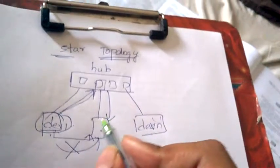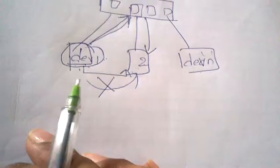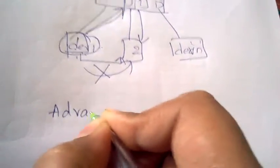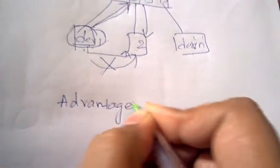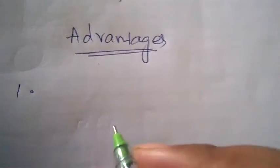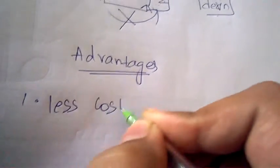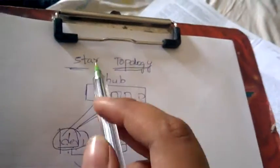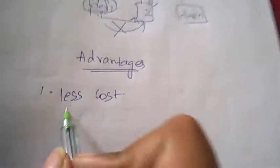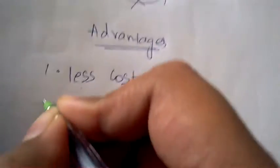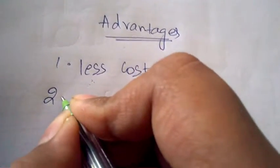This is the working principle of star topology. Now let us see the advantages and disadvantages of the star topology architecture. Coming to advantages: the first advantage is that it requires less cost — we can construct or set up a star topology with less cost. It is cost effective and less expensive.